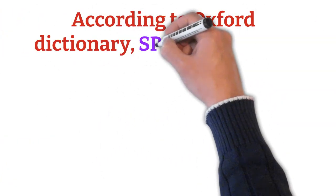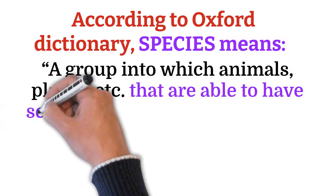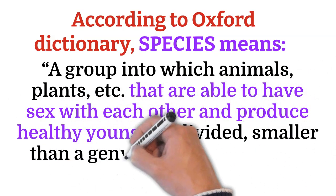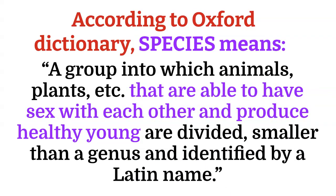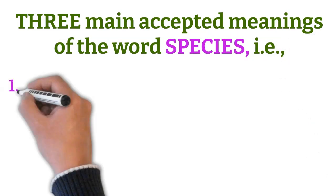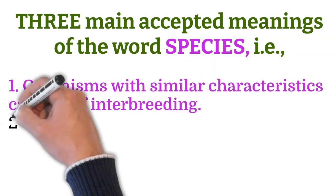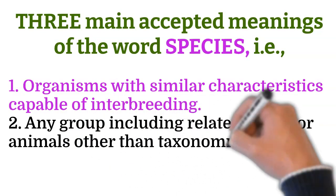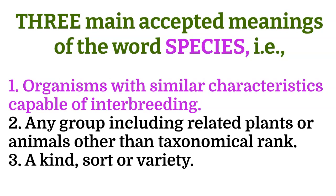According to Oxford Dictionary, a group of animals, plants, etc. that are able to reproduce with each other and produce healthy young, ranked smaller than a genus and identified by a Latin name. Thus, we find three main accepted meanings of the word species: organisms with similar characteristics capable of interbreeding; any group including related plants or animals other than taxonomic rank; and a kind, sort, or variety.